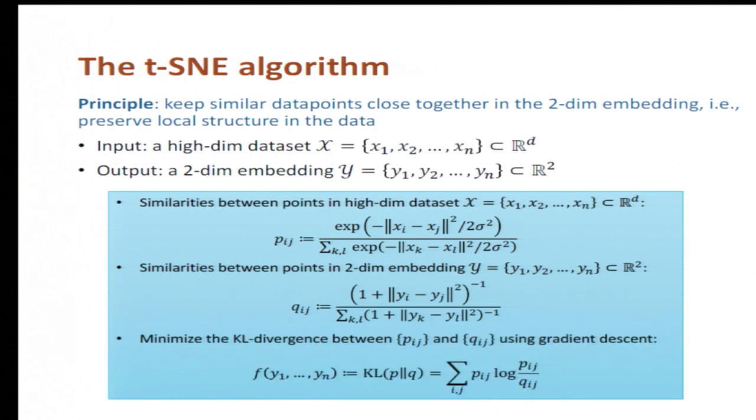And what t-SNE does is to try to minimize the KL divergence between these two similarity measures, Pij's and Qij's, using gradient descent. So this is the objective function, and everything here is a function of the embedding points Y1 up to Yn, which are the variables.